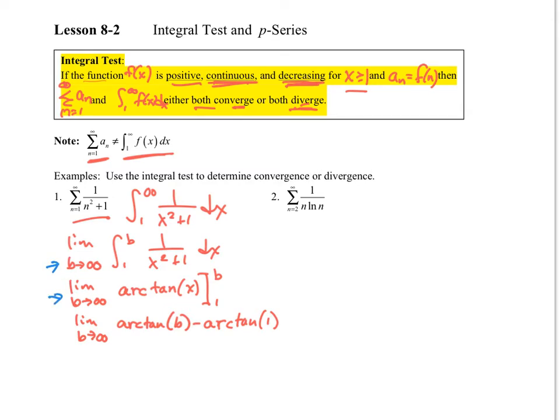The antiderivative of 1 over 1 plus x squared is arctan of x. So I still have my limits 1 to b and the limit. I plug in the b and satisfy this.